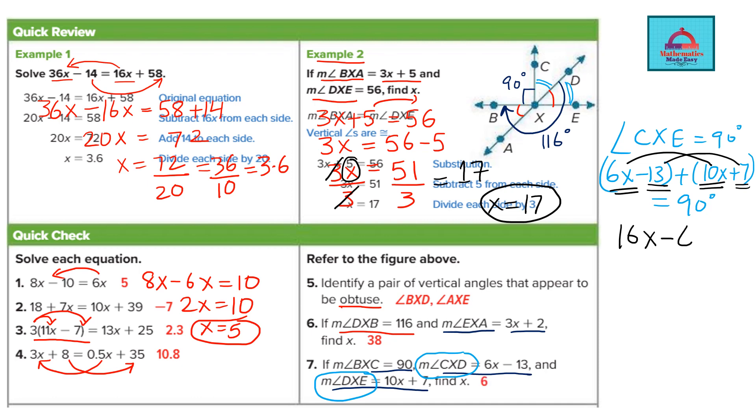That's minus 6 equal to 90. Now solve this equation for x. I move the 6 on the other side. It becomes 96. So x is going to be 96 divided by 16. So you will get your value of x from here. So let's check our final answers.